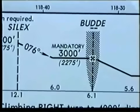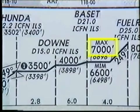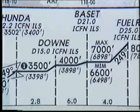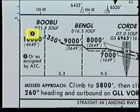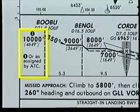Unless otherwise noted, profile views depict minimum altitudes. This altitude, however, is listed as mandatory, so you must cross Buddy Marker at exactly 3,000 feet. The abbreviation MAX indicates a maximum altitude, and MIM means minimum. On this approach, you must cross Bassett intersection between 7,000 and 6,600 feet MSL. This approach shows various step-down fixes, which are used to help you descend to a lower altitude. The circled number refers you to a note located elsewhere on the chart.